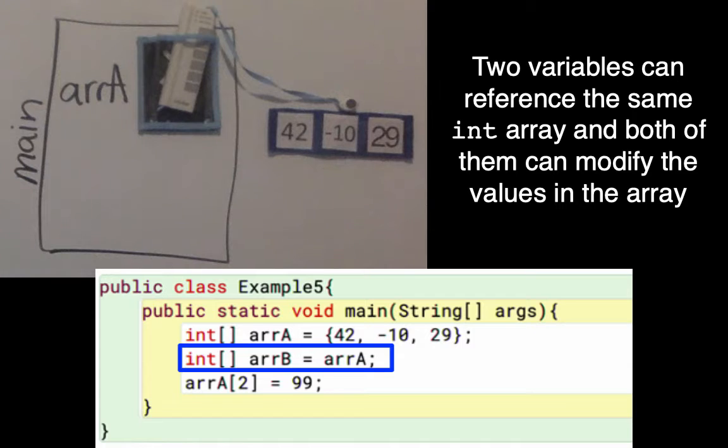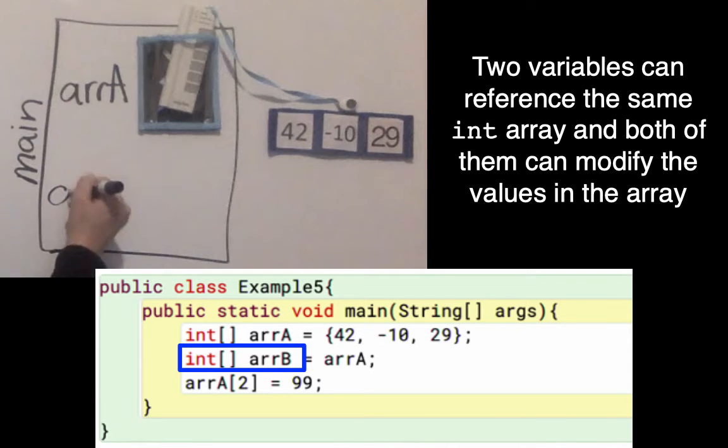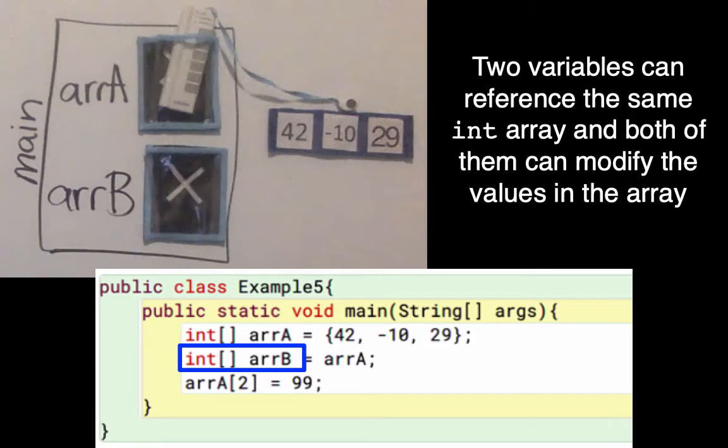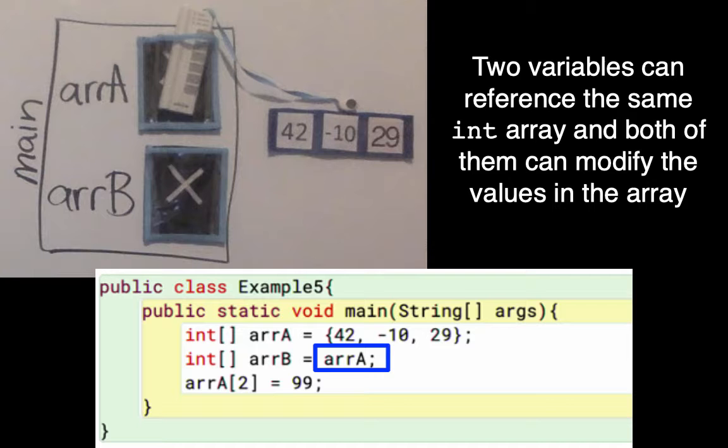My second line says int[] arrB equals arrA. I'm going to call those array A and array B. So int[] arrB creates a local variable with that name, a variable that can hold a reference to an array. The right hand side is array A.